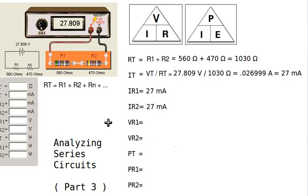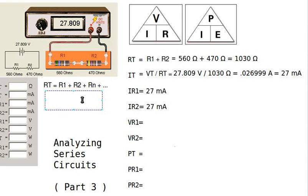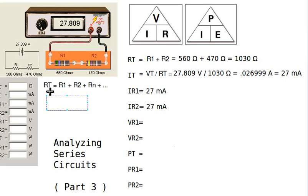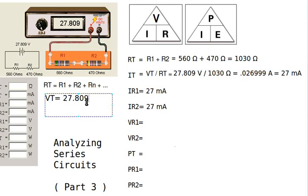We already have one voltage: the power supply voltage, considered to be V_T or voltage total, which equals 27.809 volts. Now we want to find the voltage across R1, meaning what voltage we would measure if we connected a voltmeter across R1.